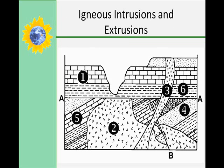An extrusion is igneous rock that formed from lava at the surface of the crust. An extrusion must be younger than the strata below it, but older than any layers above it. Intrusions are caused when molten rock is injected into older rock layers in the crust — it cools and crystallizes to form igneous rock. Intrusions are younger than all of the rock layers in contact with them.